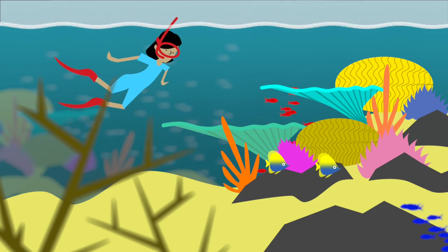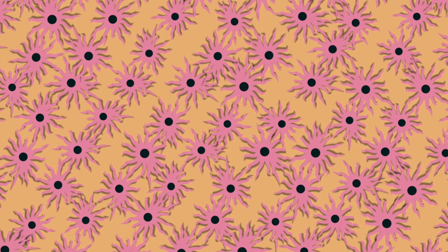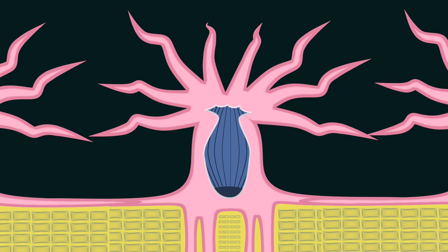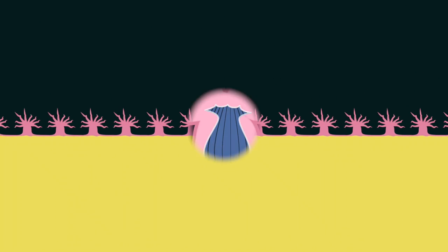The big coral structures you see when snorkeling are actually made up of hundreds of animals called polyps. Each polyp builds its own skeleton and hundreds of polyps join together to form a coral colony.